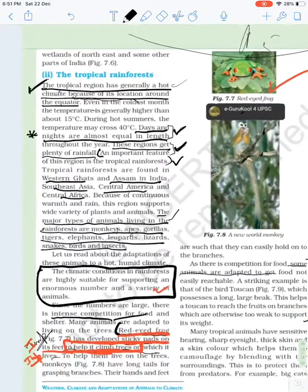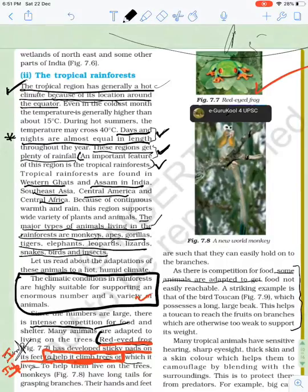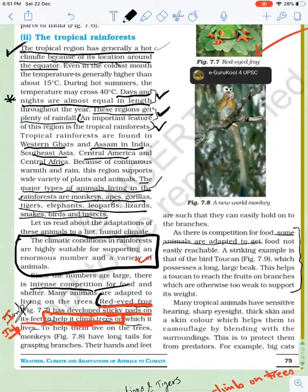In tropical rainforest, there are moderate conditions. Minimum temperature is 15 degrees Celsius in winter and maximum 40 degrees Celsius in summer. Day and night are approximately equal. Our tropical rainforests include the Western Ghats in Kerala, Assam, and if we talk about continents, Southeast Asia, Central America, Central Africa.